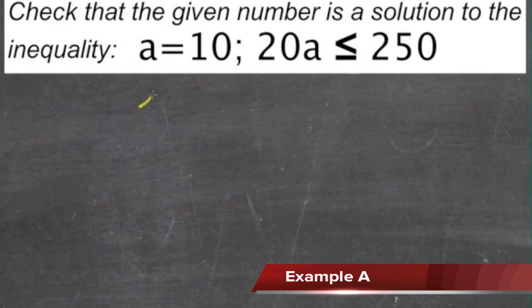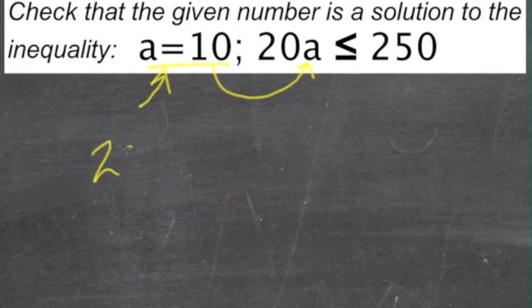We're going to take the information we're given for the variable, in this case a equals 10, and we're going to substitute that in place of the variable in the equation. So we're going to take this 10, put it in place of the a over here, and then check the answer and see if it's a true statement. So we start with 20a is less than or equal to 250.